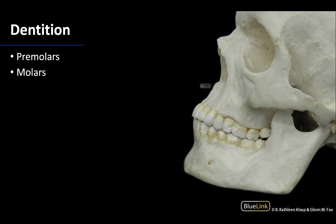Looking at this view here you can see it a little bit better. This is an incisor, this is an incisor, this is a canine, and then you get into your two premolars which you can see better on the lateral view, and then your three molars. You will have a similar organization in terms of the mandibular teeth.